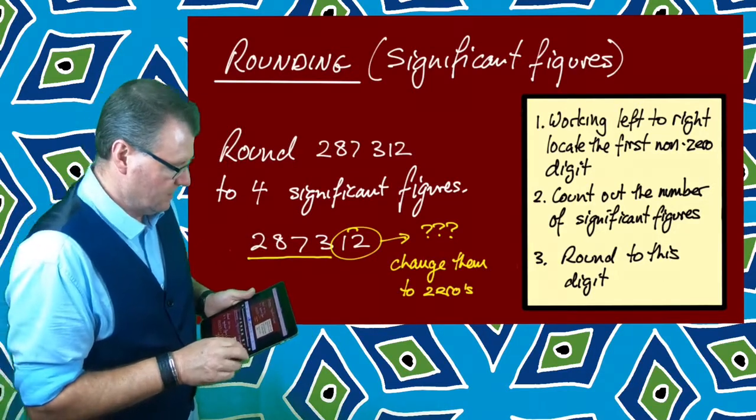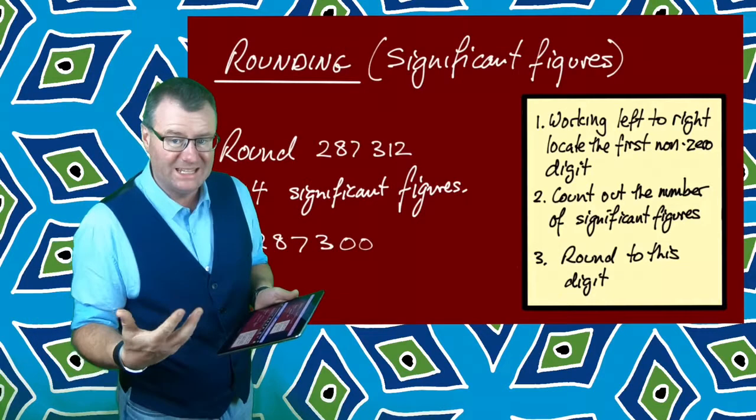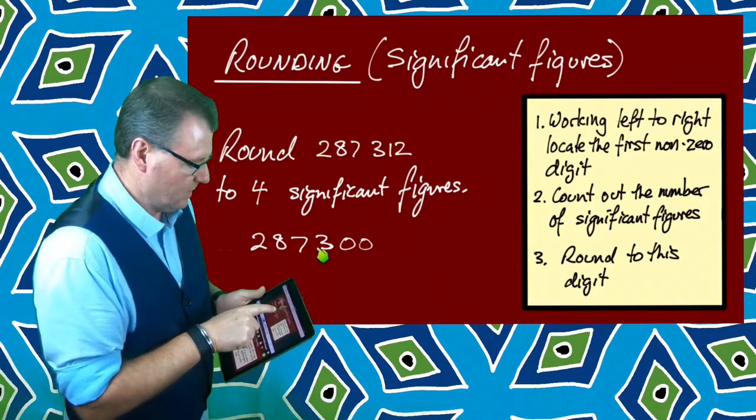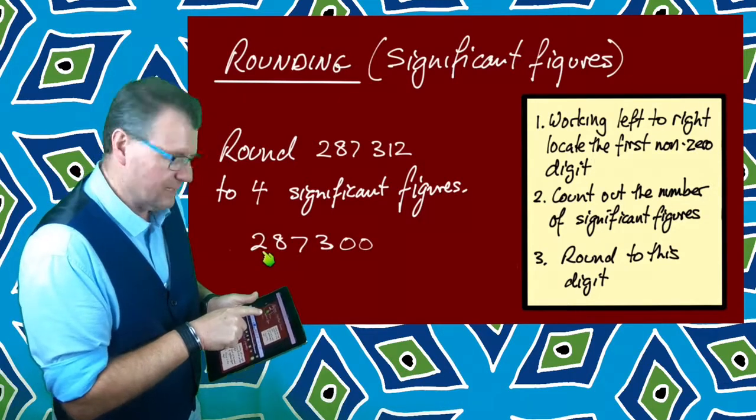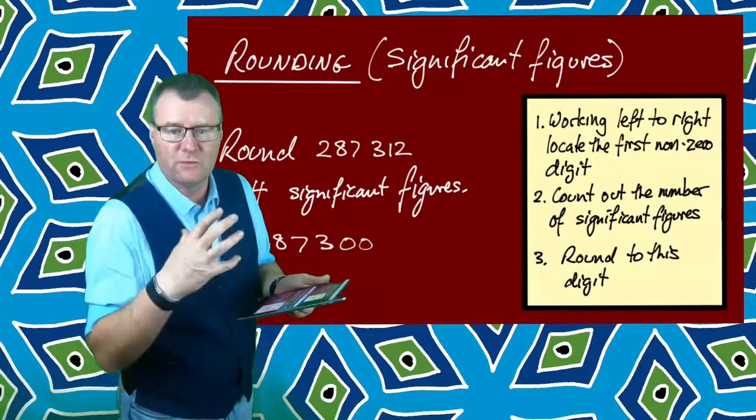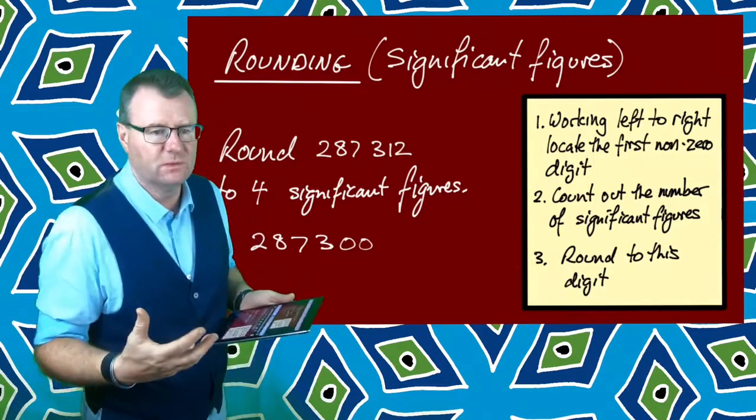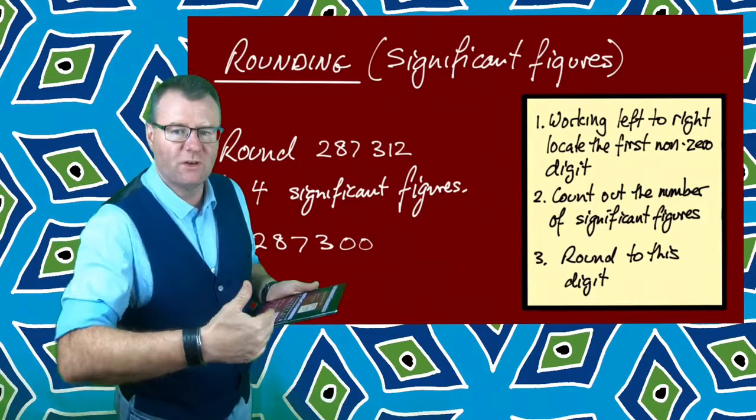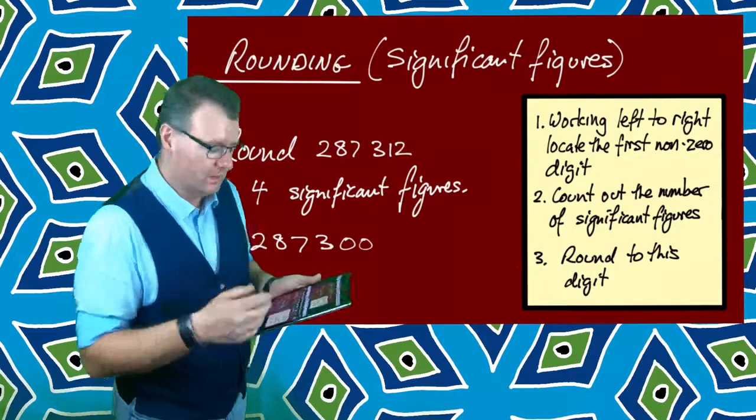I just change them to zeros and now I've got 287,300, which is very similar to my original number. It only has four significant figures - the zeros at the end don't count, but it is very close. It's been rounded to that number. So if it's a whole number without any decimals, instead of chopping the digits off after our significant figures, we replace them with zeros.